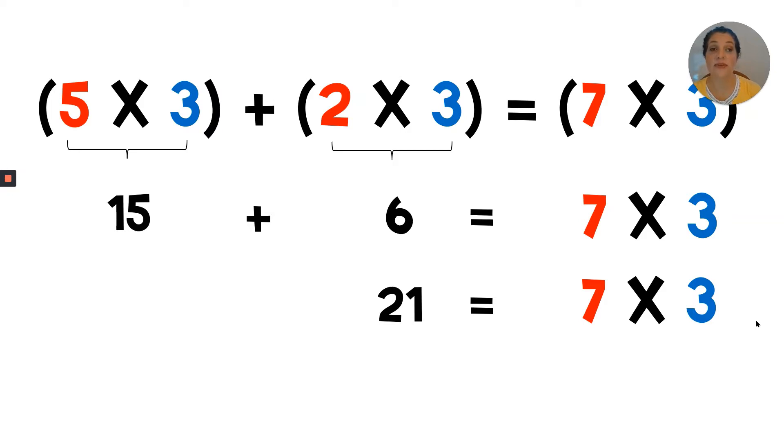Add to that the product of two times three. Three, six. And then we should be able to determine the product of seven times three. So what is fifteen plus six? Fifteen plus six is twenty-one. Let's count up from fifteen. Sixteen, seventeen, eighteen, nineteen, twenty, twenty-one. So seven times three is twenty-one.